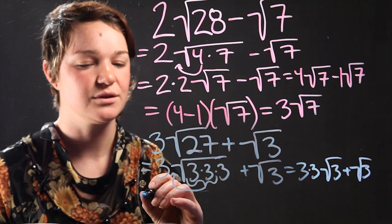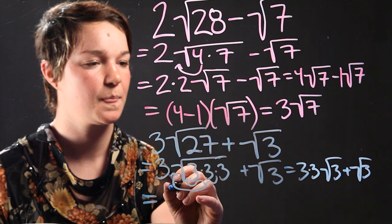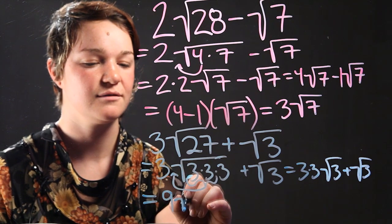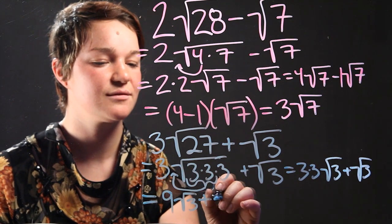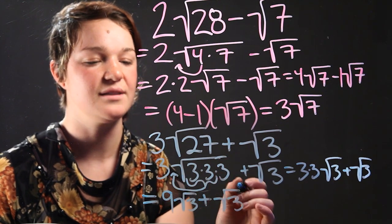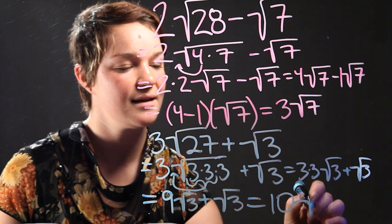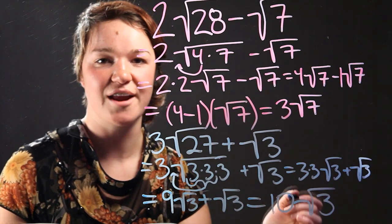We're going to further reduce this to 9 radical 3 plus radical 3. So we're going to add the 9 and the 1 in front of the radical 3. And the answer is 10 radical 3.